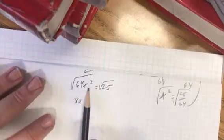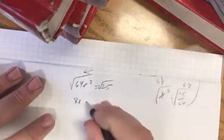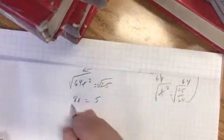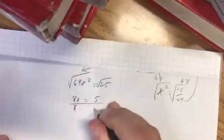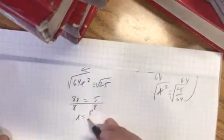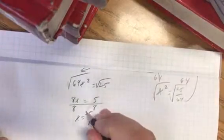Square root of 64x squared is 8x. And then, square root of 25 equals 5. And then, you just divide both sides by 8. And then, you would have x equals 5/8. And we, of course, know that because we square rooted it, it could be a plus or a minus.